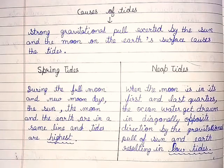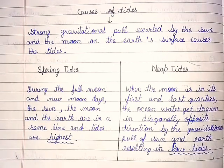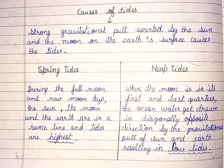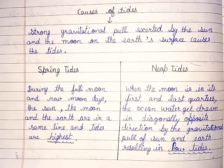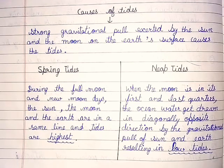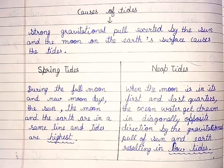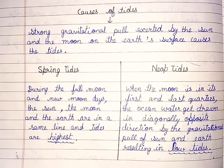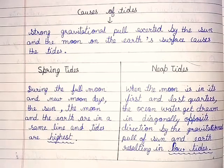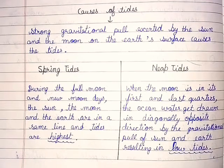Causes of tides: the strong gravitational pull exerted by the sun and the moon on the earth's surface causes the tides. Spring tides: during the full moon and new moon days, the sun, the moon and the earth are in the same line and tides are highest.